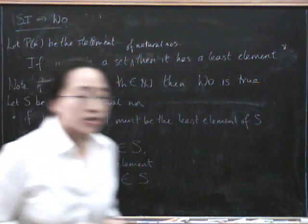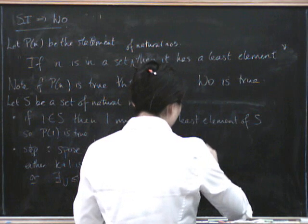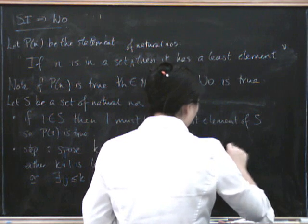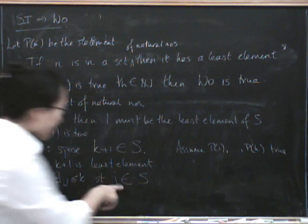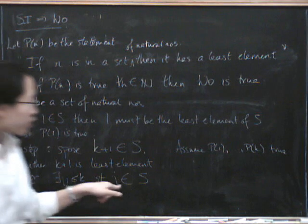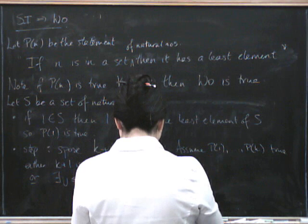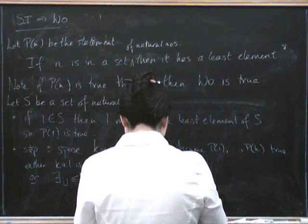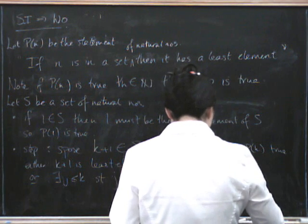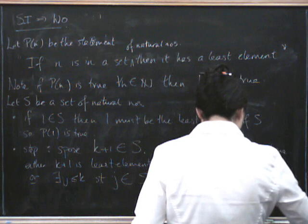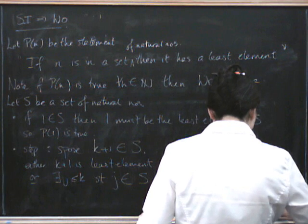But then, we're allowed to assume P(1) all the way up to P(k), so we're going to assume that P(1) through P(k) are true. So in particular, P(j) has to be true. And now that j is in the set, we know that the set has a least element. So this implies S has a least element, by P(j) being true.